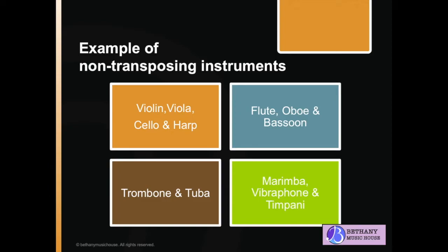Examples of non-transposing instruments are violin, viola, cello, flute, oboe, bassoon, trombone, tuba, marimba, vibraphone, and timpani.